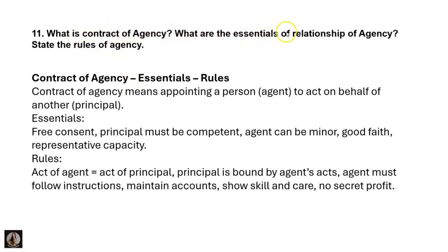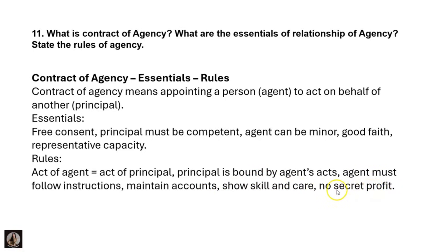The next question: what is a contract of agency? What are all the essentials of the relationship of agency and state the rules of agency? Contract of agency means appointing an agent to act on behalf of another — the principal. Essentials include free consent, the principal must be competent, the agent can be a minor, good faith, and representative capacity. Rules: the act of agent equals the act of the principal; the principal is bound by the agent's acts; the agent must follow instructions, maintain accounts, show skill and care, and make no secret profit.